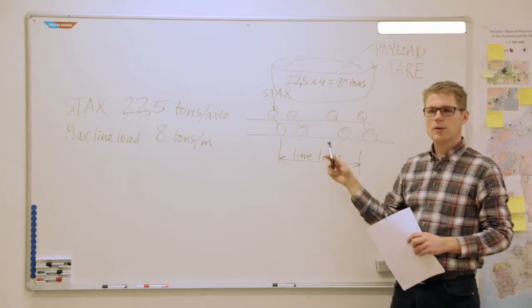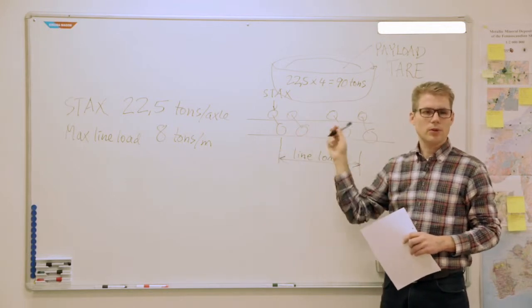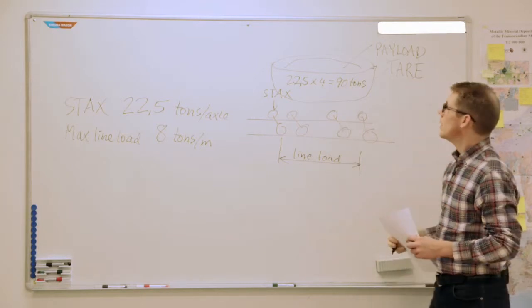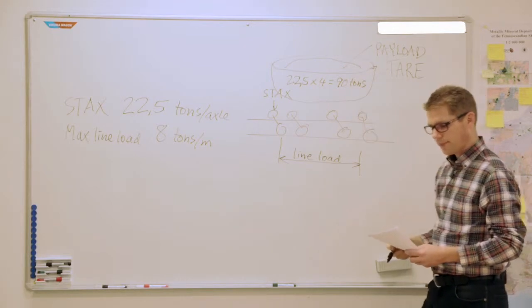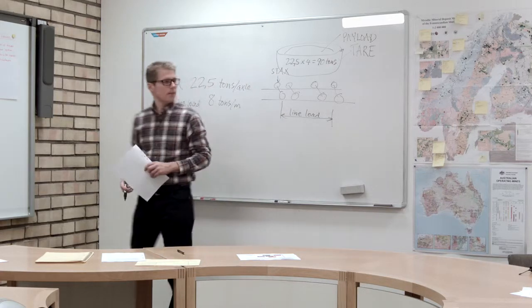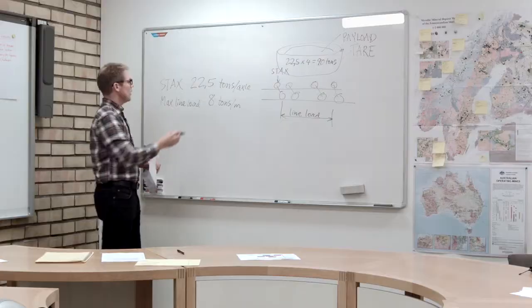Of course you don't want to pay a lot of money to transport steel back and forth, so you want to keep this tare weight as low as possible to be able to have more payload instead. Then if you combine this figure with the 90 tons total weight here, wagon weight.